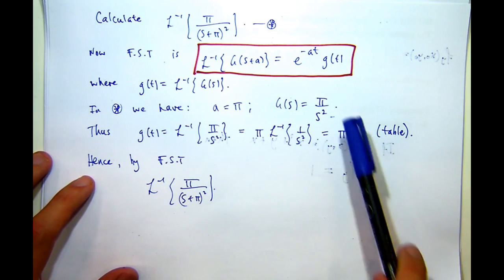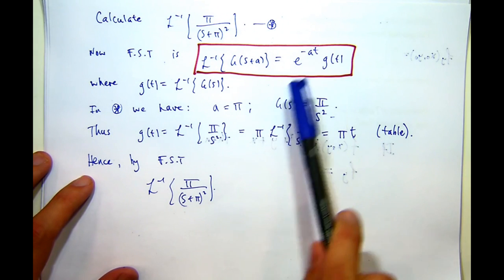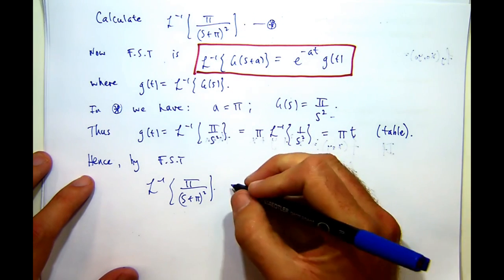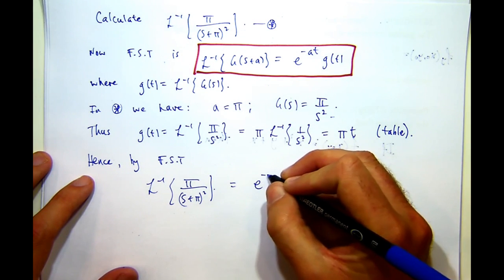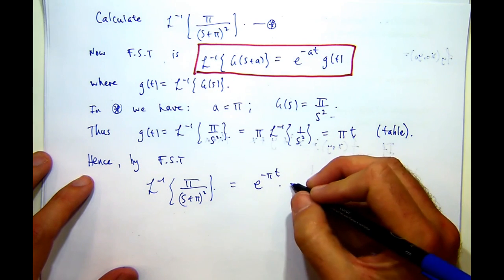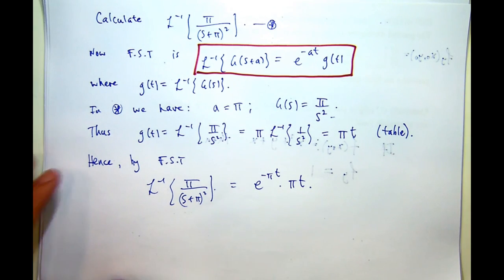is going to be the product of this with e^(-at), and a is π. So it's going to be e^(-πt) times πt.